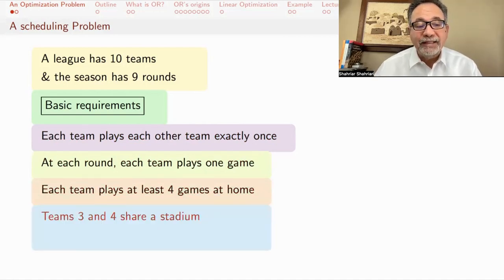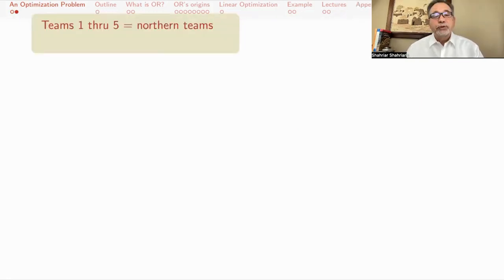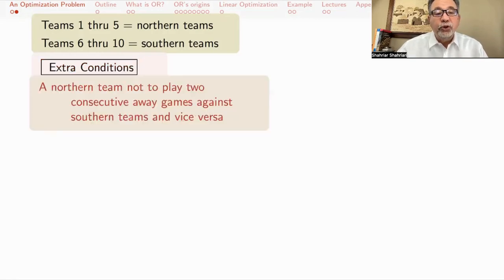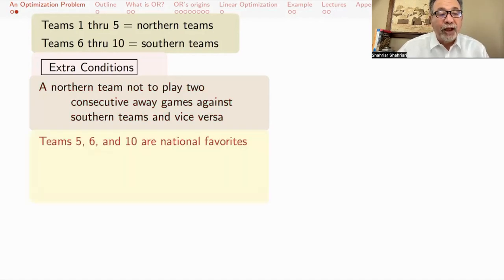Another requirement is that teams three and four share a stadium and so they cannot play at home in the same round. Teams one through five are considered northern teams and teams six through ten are southern teams. And here's some extra conditions. The conditions in the previous slide are things that you just have to satisfy. The extra conditions are things we really want, but under certain circumstances we might be able to violate one or the other.